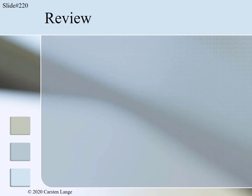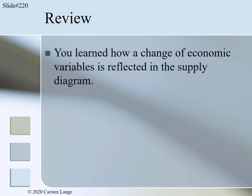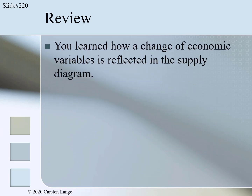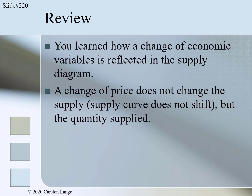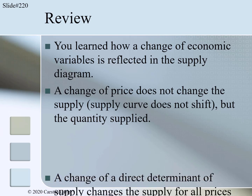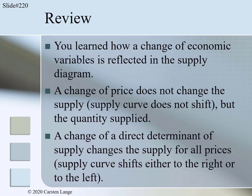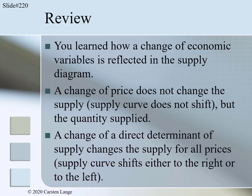What did you learn in this segment? You learned how a change of economic variables is reflected in the supply diagram. You learned that a change of price does not change the supply — the supply curve would not shift, but the quantity supplied would change. And finally, you learned that a change of a direct determinant of supply changes the supply for all prices, and the supply curve shifts either to the right or to the left.